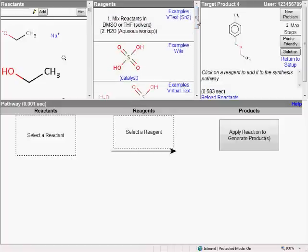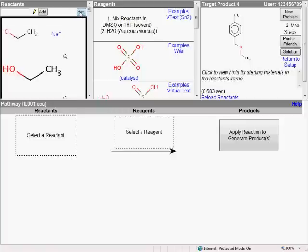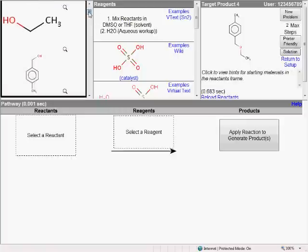Our job, then, is to piece together the correct combination and sequence of reactants and reagents to reproduce this target product. One of the first things I'd go ahead and do for any problem is to click on this Hint button, which narrows down the list of possible starting materials. The hint is free, so you might as well take it.